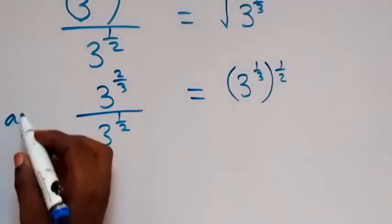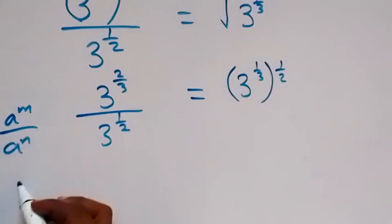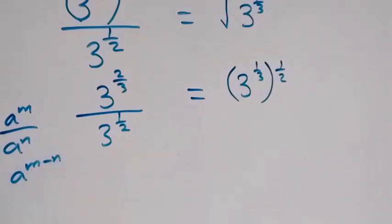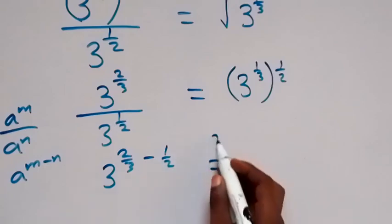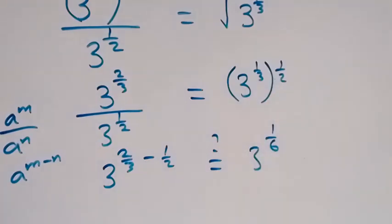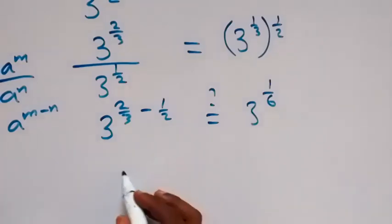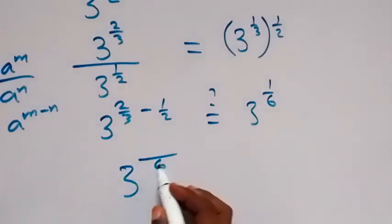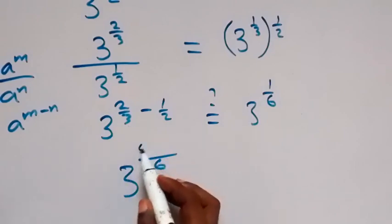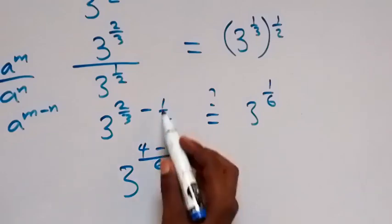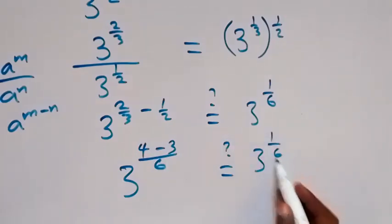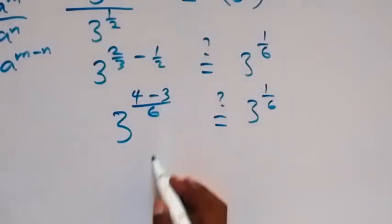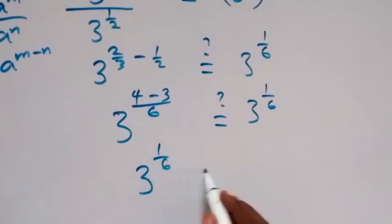From the law of indices, when we have a^m over a^n, this equals a^(m minus n). Applying that here, we get 3^(2/3 minus 1/2). The LCM of the denominators is 6, so 2/3 becomes 4/6 and 1/2 becomes 3/6, giving 3^(4/6 minus 3/6) = 3^(1/6). This equals 3^(1/6) on the right hand side.